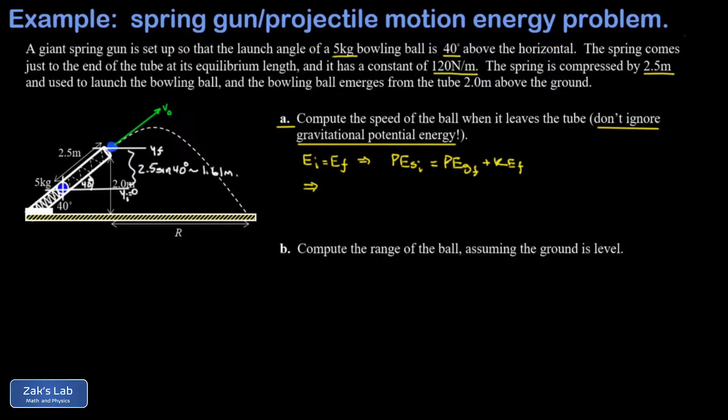So we plug in the expressions for all these things. My initial spring potential energy is one half kx squared. I'll call it x initial for the initial compression. My final gravitational potential energy is going to be mgy final. And my final kinetic energy is going to be one half mv squared. I'm going to call that v naught because that's the launch velocity we're going to use for part b. So we just plug in all the numbers. K was 120 newtons per meter, the initial compression was 2.5 meters.